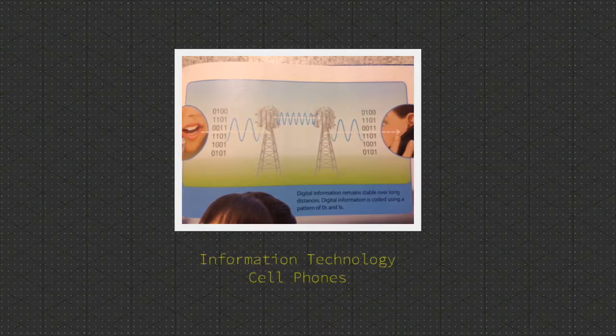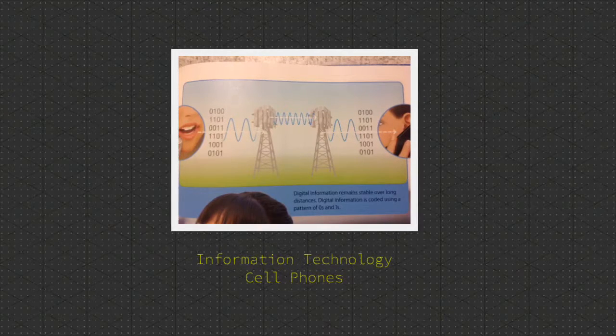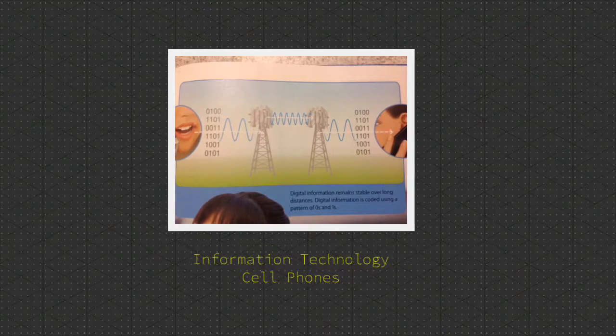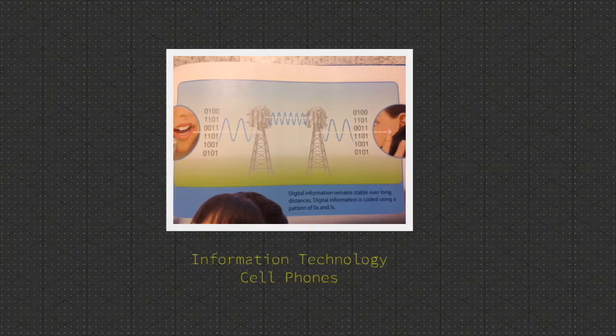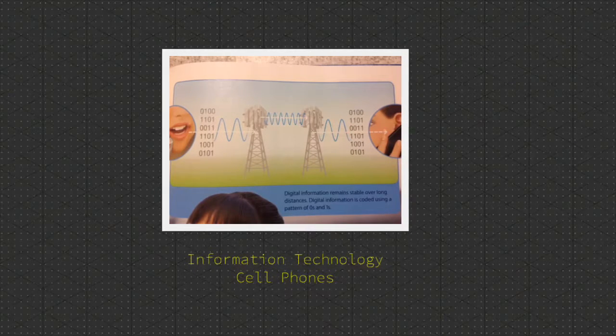Your friend's phone converts the digitized information back into the sound of your voice. Cell phones use a digital code to maintain the sound quality of conversations over long distances. Digital information remains stable over long distances. Digital information is coded using a pattern of zeros and ones.